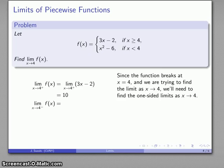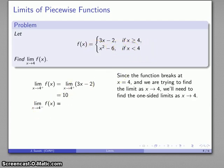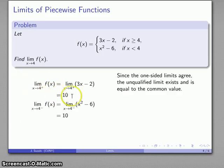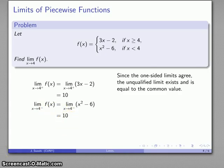Likewise, I can take the limit as x gets close to 4 but always staying a little bit below it. If x is less than 4, my function is x² − 6. So I find the limit as x approaches 4 from below of x² − 6. As x gets close to 4, the expression gets close to 4² − 6, which also equals 10. The important observation: both one-sided limits have the same value. The limit from above is 10 and the limit from below is 10.